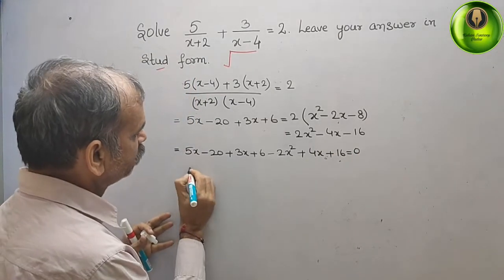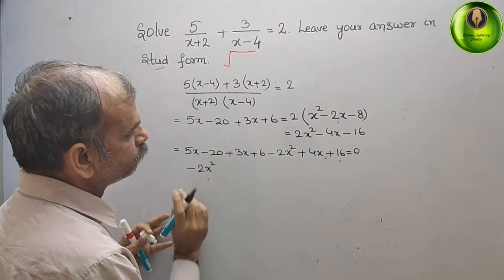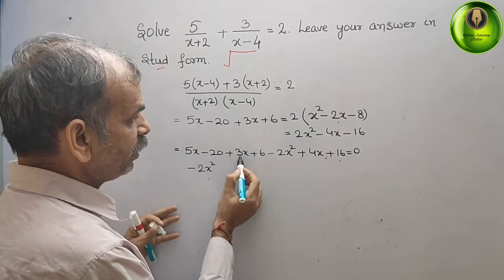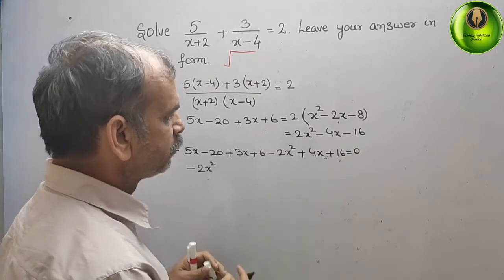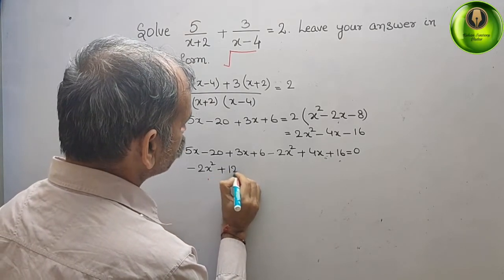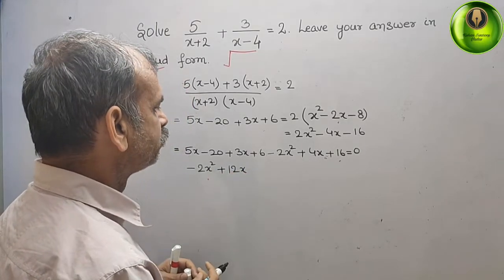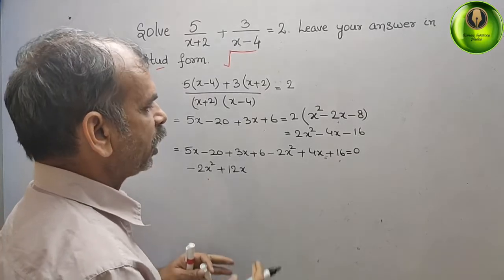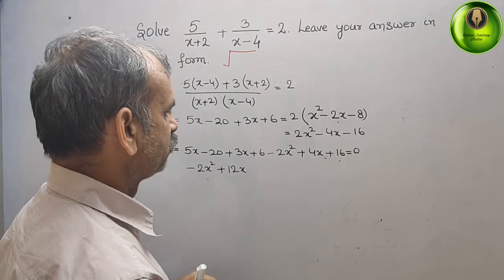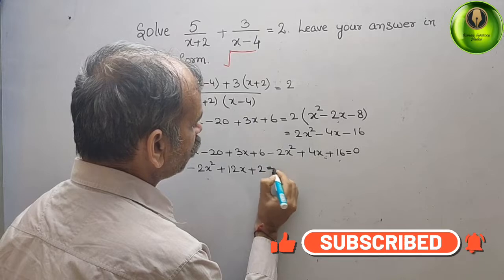Collecting like terms: -2x² for the x² term; for x: 5 + 3 + 4 = 12, so +12x; for constants: -20 + 6 + 16 = +2. So we get -2x² + 12x + 2 = 0.